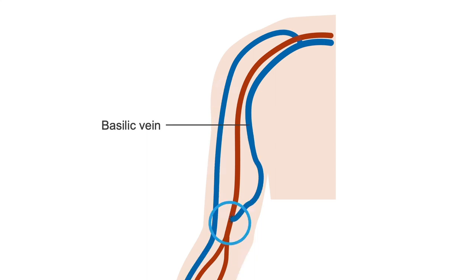For brachiocephalic fistulas, the locations of the basilic outflow vein measurements are at the same points in the upper arm.